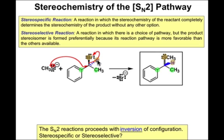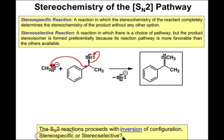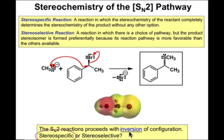When two substituents on a stereocenter change positions while two of them stay the same, we say that that's an inversion of configuration. The configuration of the reactant will define the configuration of the product, given that the reaction goes with inversion of configuration. For that reason, we say that the SN2 reaction is a stereospecific reaction, which goes by inversion of configuration.